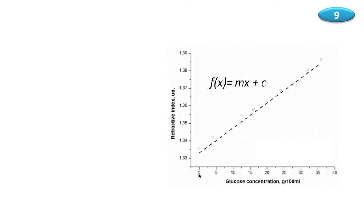At 0 grams per 100 ml, the sugar concentration is zero — this is the pure water value. We can see experimental data at 5, 10, 15, and 20 grams per 100 ml, and so on up to 40 grams per 100 ml.